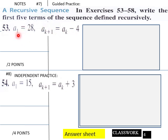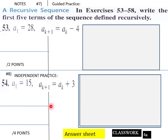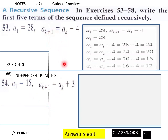We have our first term a₁ = 28, and aₖ₊₁ = aₖ − 4. This problem is on you, students. Pay attention up here to solve yours. So a₁ = 28 and aₖ₊₁ = aₖ − 4.